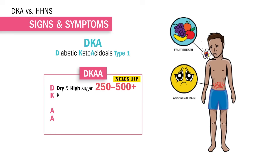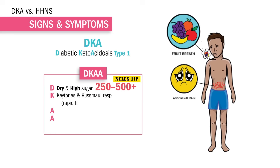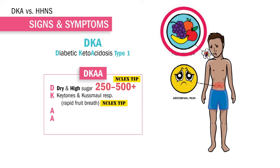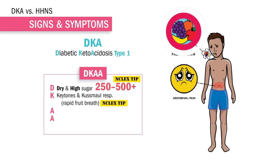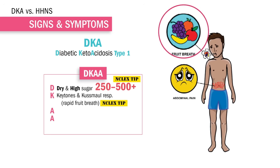K is for ketones and Kussmaul respirations, also known as fruity breath — key words for the NCLEX. Deep, rapid breathing that smells fruity is called Kussmaul respirations.